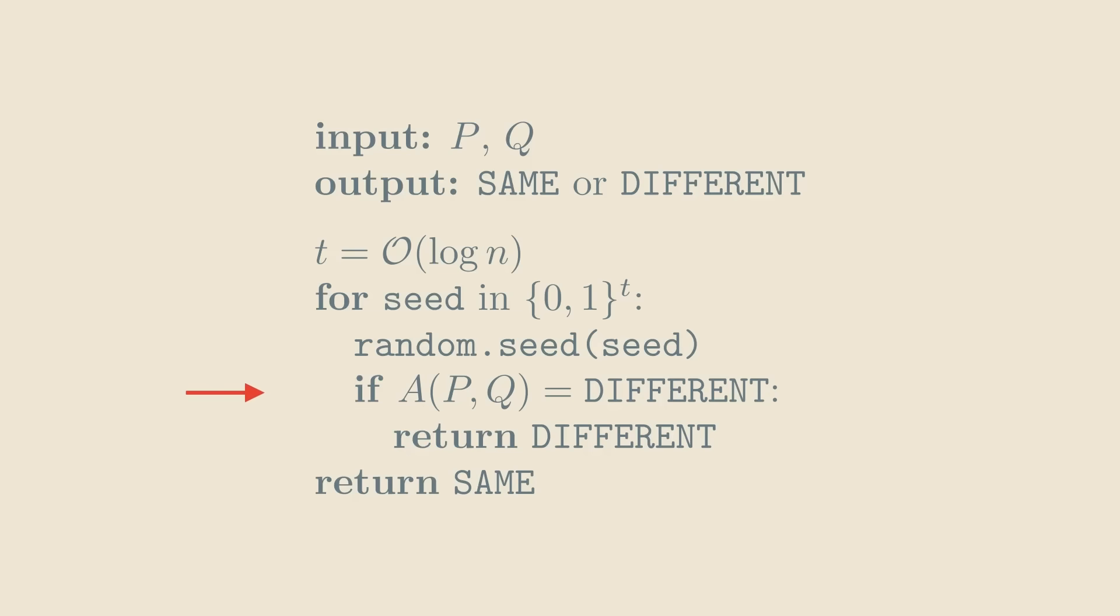If, for at least one seed, A finds out that the two expressions are different, the new algorithm also answers that they're different. Since the seed is so short, this new algorithm still runs in polynomial time. And since A is correct for at least some seeds, our final algorithm is also correct.